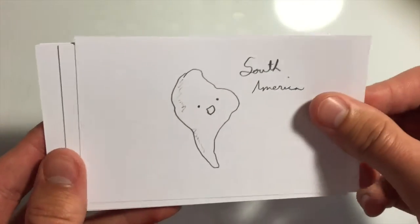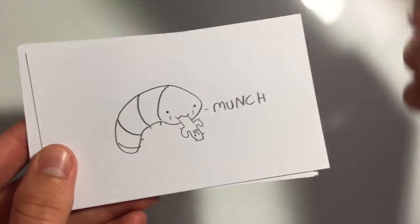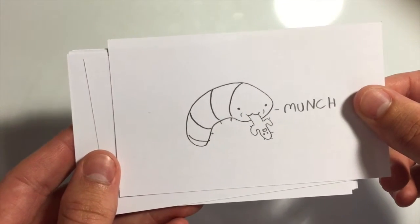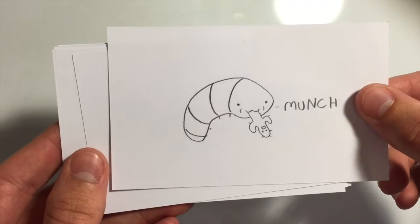The cactus moth is an organism that is native to South America. Its larvae feed on cactus, giving it its characteristic name, and this is also what makes it a harmful killer, a killer of cacti.